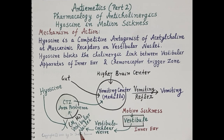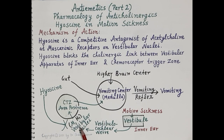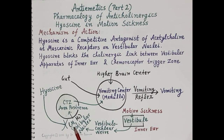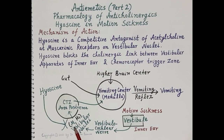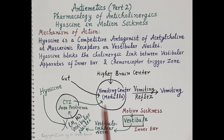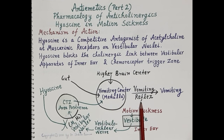The vestibular nuclei consist of muscarinic receptors and histamine H1 receptors. Acetylcholine is a central agonist at muscarinic receptors on the vestibular nuclei. It stimulates the vestibular nuclei due to motion sickness, and the signals are relayed to the chemoreceptor trigger zone and further sent to the vomiting center, stimulating the vomiting reflex and resulting in vomiting.